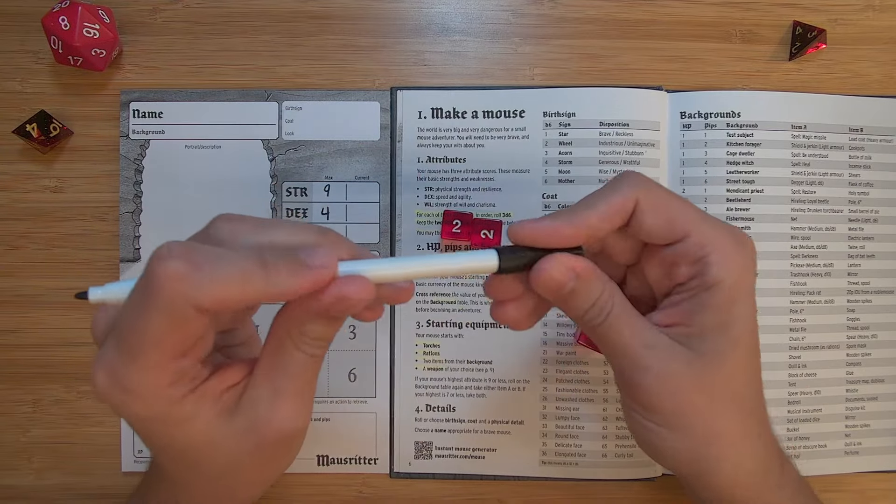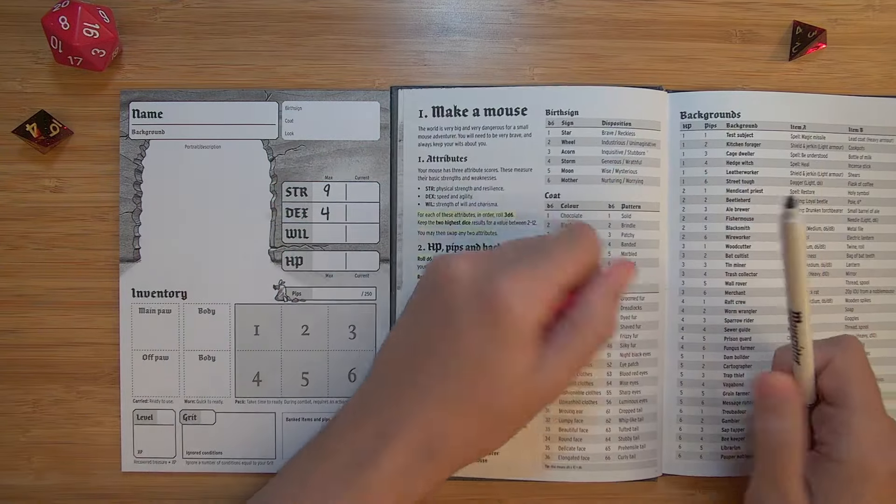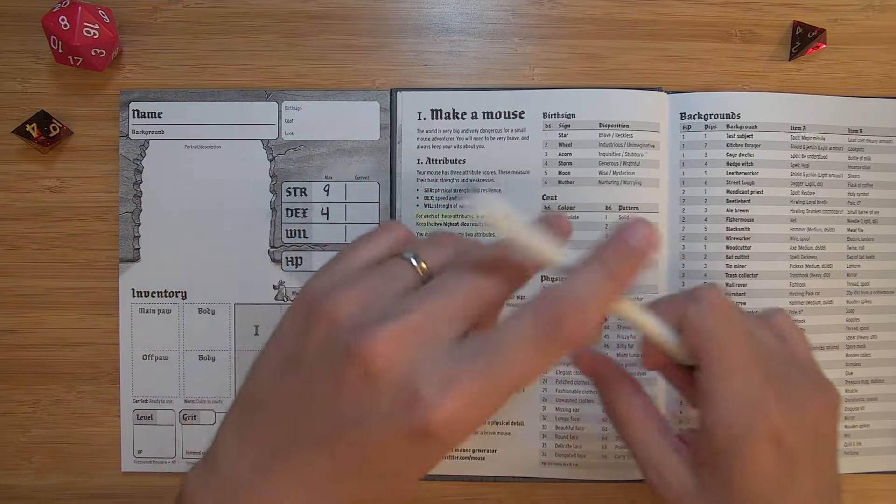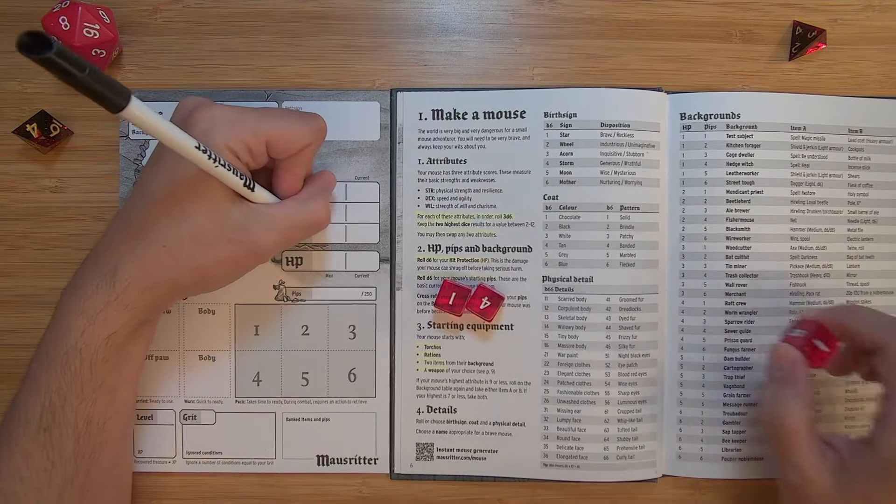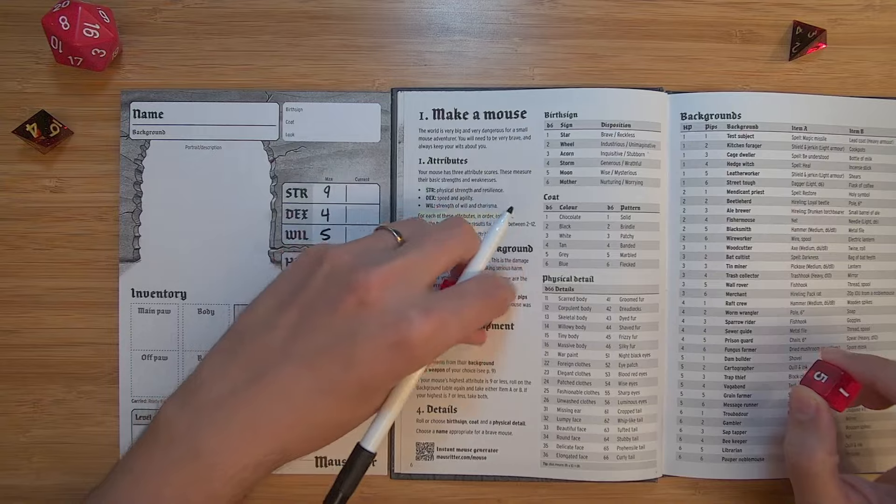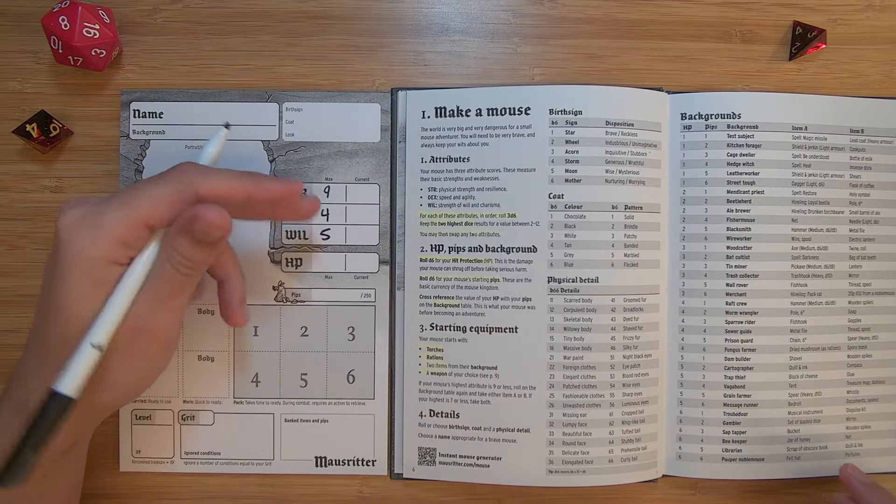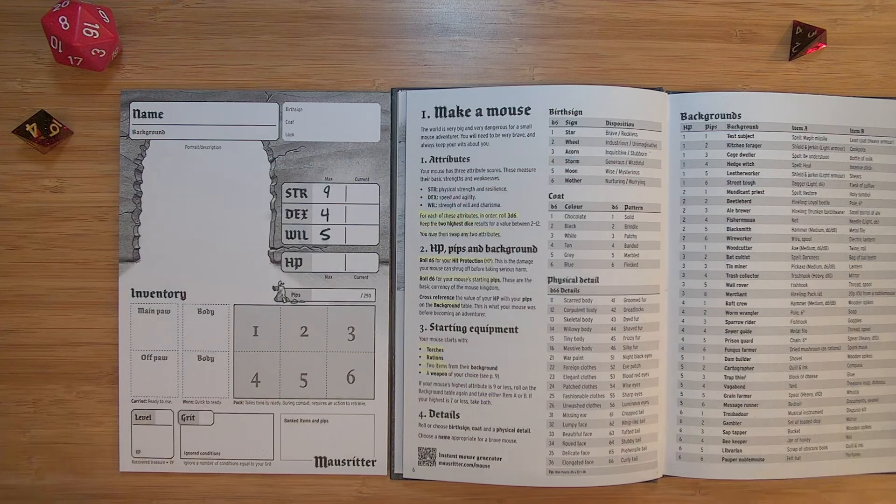And then for dex, we'll do the same thing. 2, 2, and 2. All right. So we've got 4 for our dex. So he's a big, strong, burly mouse. We'll do one more for our will. 4, 1, and 1. So we've got 5. So we'll drop the lowest. 5 for our will. And I kind of like that distribution of stats. So I'm going to leave them. It does give the option to switch two of those if you wanted to.